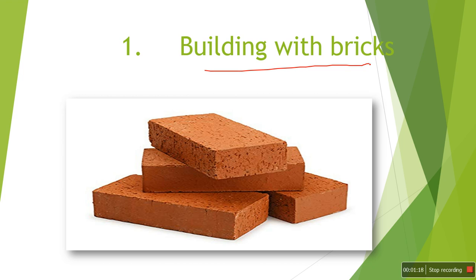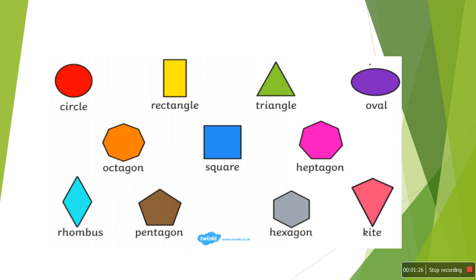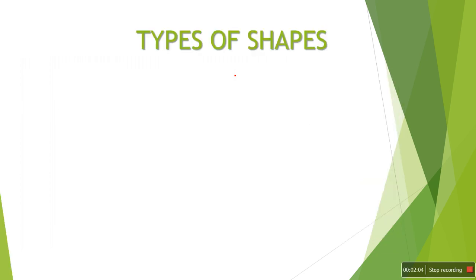We are going to study the properties of these shapes. Every student has already seen shapes like circle, rectangle, triangle, oval, and octagon. Up to class four, we need to study only five shapes: circle, rectangle, triangle, oval, and square. After class five or six, we will study octagon and other shapes. So up to class four, we study only five shapes.